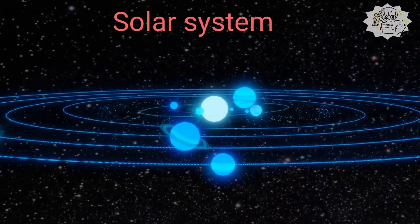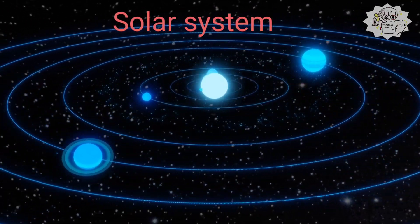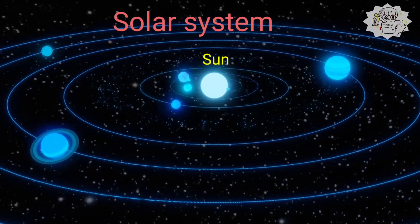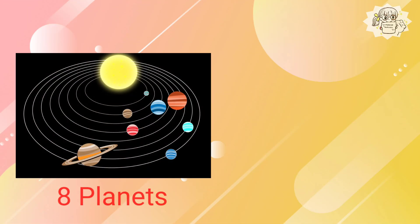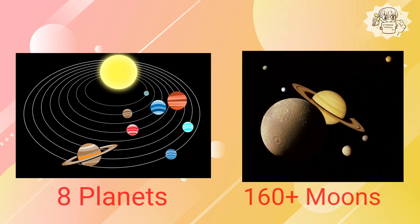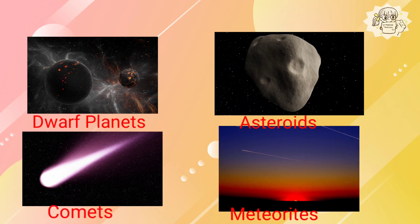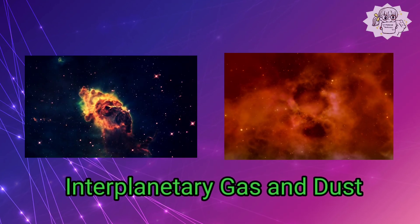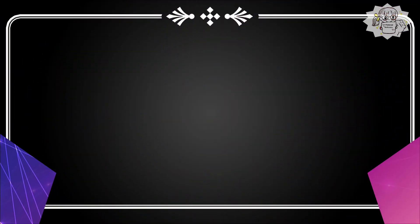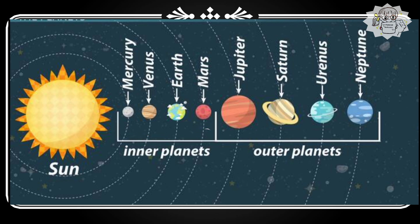The solar system consists of a central star, the Sun, and the bodies that orbit it. These bodies include eight planets and more than 160 known moons, dwarf planets, asteroids, comets, and meteoroids. The solar system also contains interplanetary gases and dust.